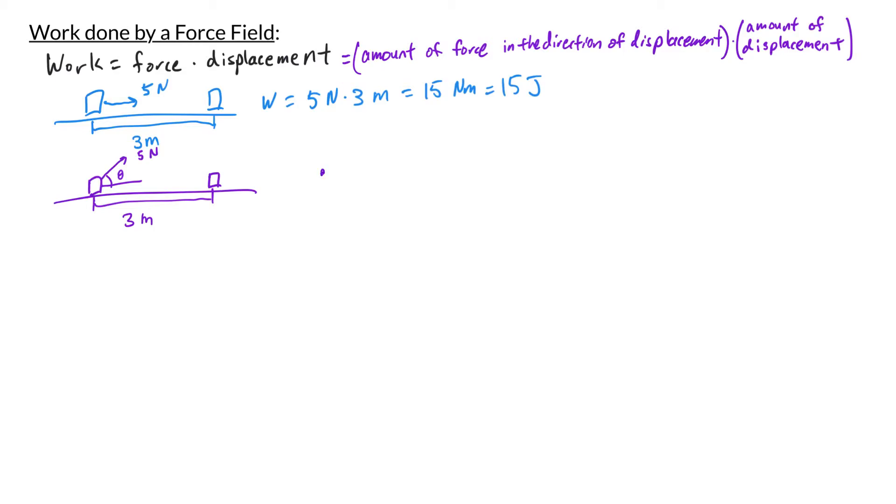So if we look at our force here and draw it as a triangle with an angle theta here, then the amount of force that goes in the direction of motion is the base of this triangle, which using trigonometry we can calculate as 5 times cosine theta. Therefore, the amount of work done is 5 times cosine theta newtons times 3 meters.